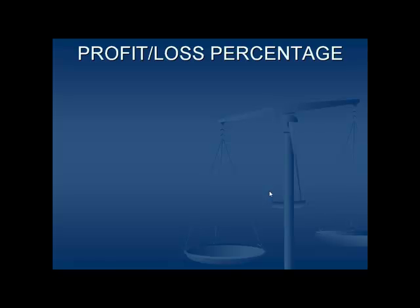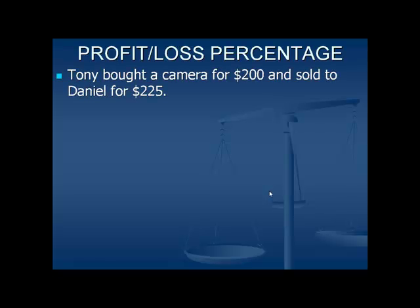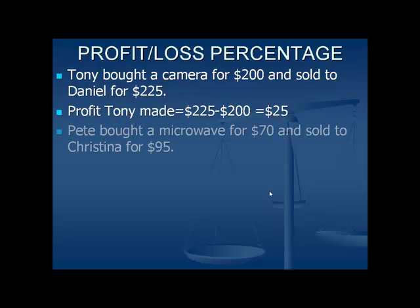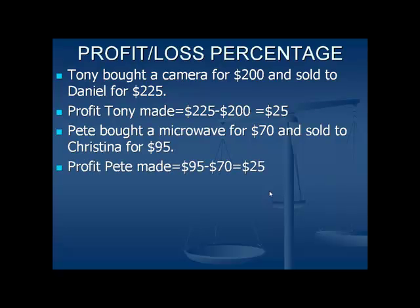Profit or loss percentage. Tony bought a camera for $200 and sold it to Daniel for $225. So Tony made a profit of $225 minus $200, that is equal to $25. Pete bought a microwave for $70 and sold it to Christina for $95. So the profit that Pete made is equal to $95 minus $70, that is equal to $25. Both of them made a profit of $25.